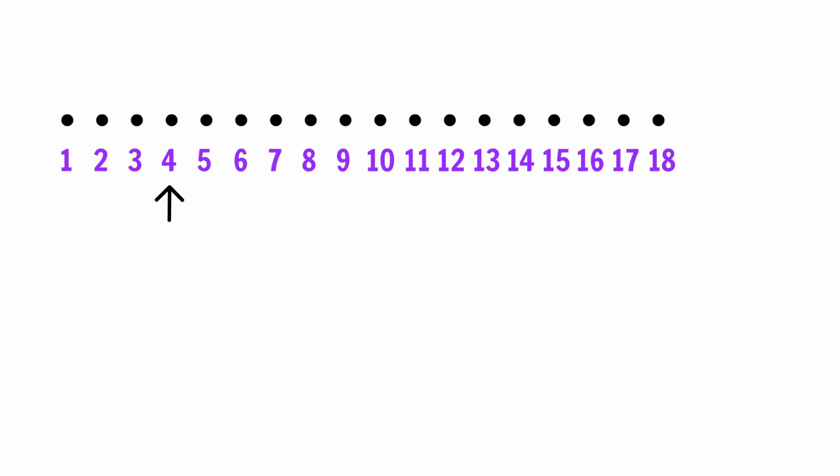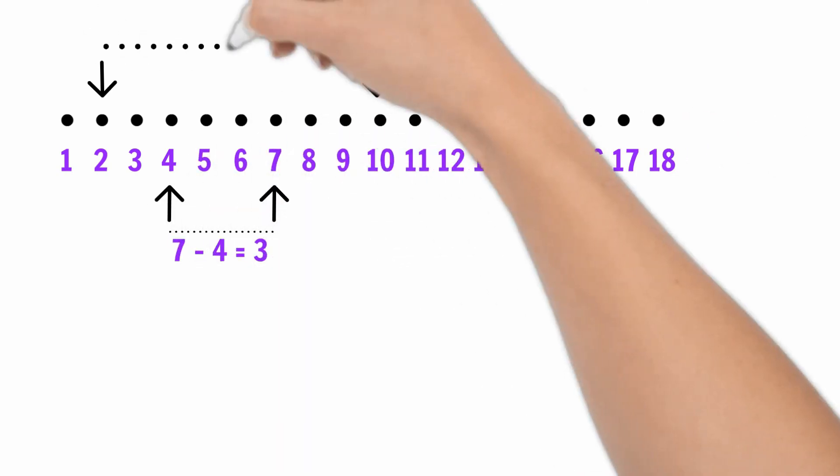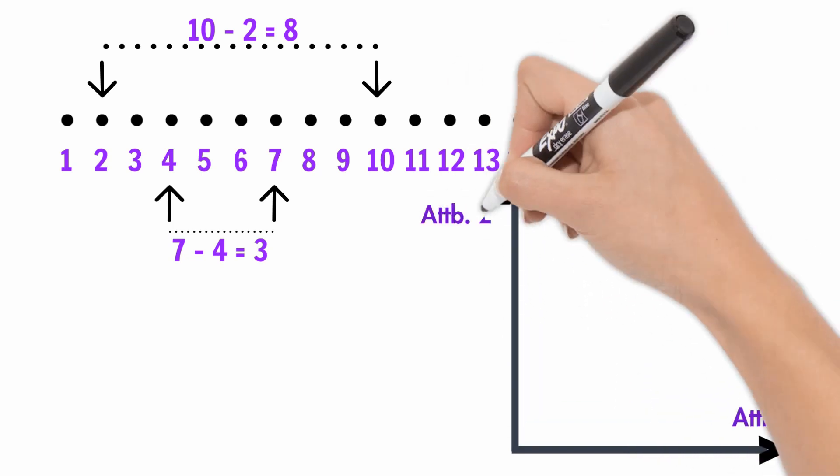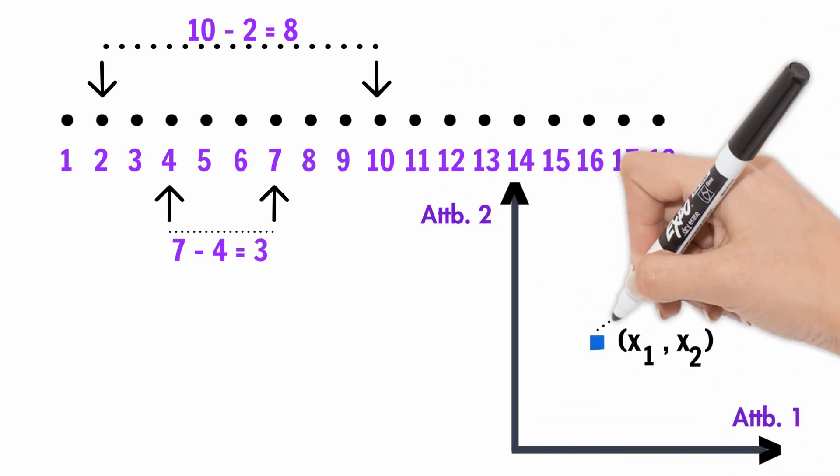To elucidate this point, if we take the example of a one-dimensional number scale, 4 and 7 are closer than 2 and 10. The distance measure is therefore very effective in identifying similarity. When we move to a two-dimensional space, we use the Euclidean measure for the distance calculation.